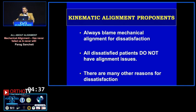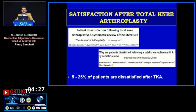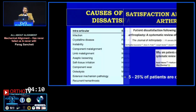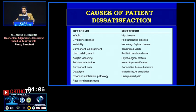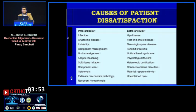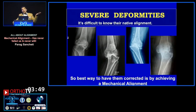The talks given by kinematic alignment advocates always try to find the reason for patient dissatisfaction. We all know that patient dissatisfaction in TKR is quite high compared to hips — as high as 25 percent. The kinematic guys always blame alignment as one of the main causes, but there are so many other reasons for a painful knee. You should look for those causes rather than just blaming alignment and assuming kinematic alignment solves the problem.